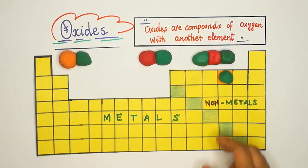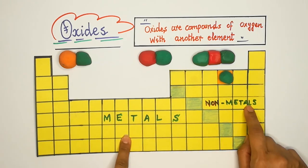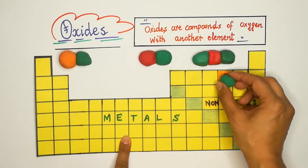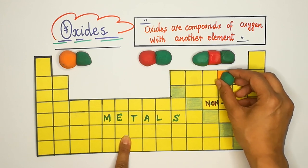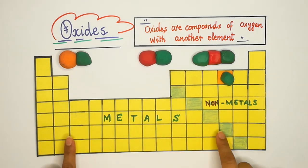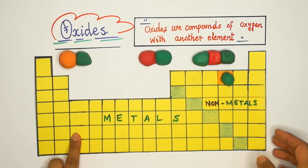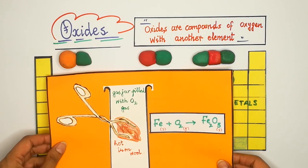Oxygen can react with metals and also with non-metals, forming compounds of oxygen. Now let's look at how these compounds actually form.